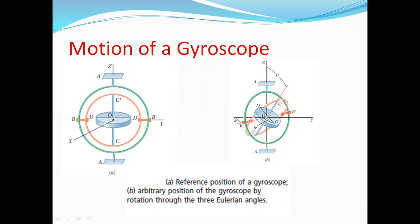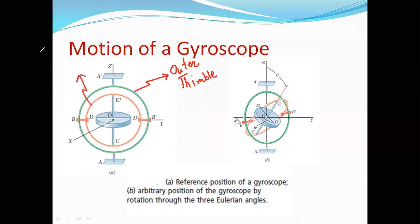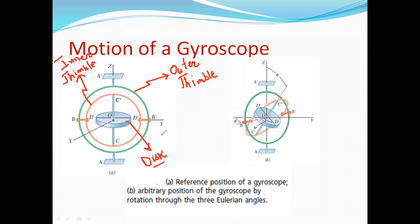This is the gyroscope, with vast applications in engineering and applied sciences. Let's get acquainted with the terminology of the gyroscope. Looking at it, we have an outer ring — called the outer thimble or outer ring. The inner one is called the inner thimble or inner ring. And the one at the center is called the central disk.